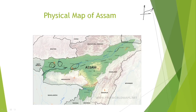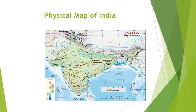On a physical map you can see mountains, rivers, and plains. On the physical map of India, mountains are shown in brown color — you can see Mount Everest. Plains are shown in green, and rivers and oceans are shown in blue.